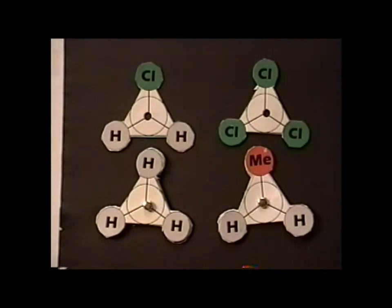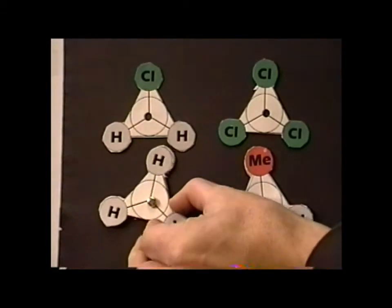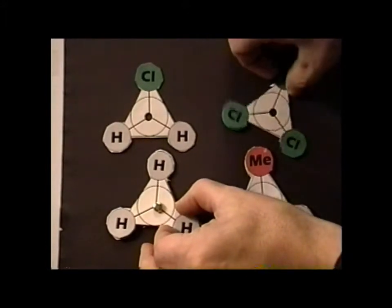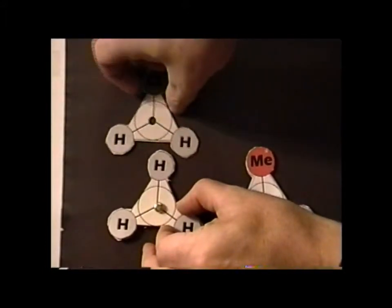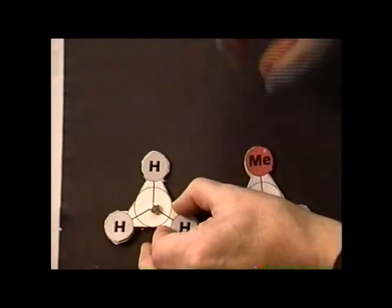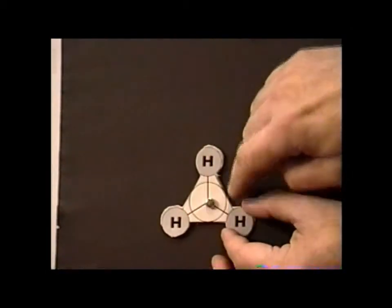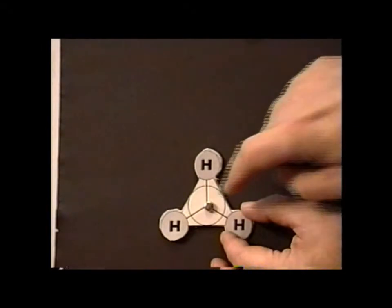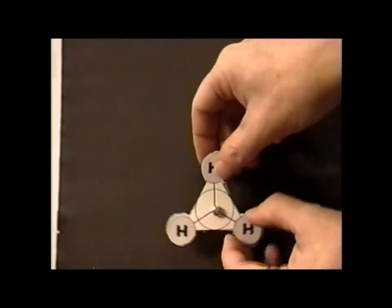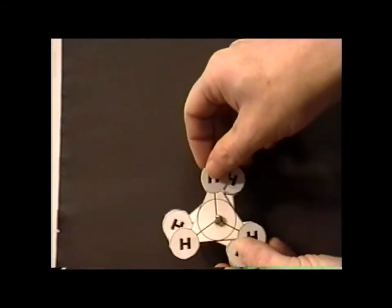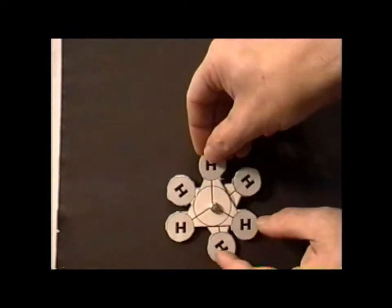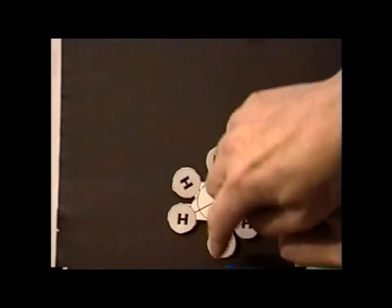But the Newman projection is much more useful than we often imagine. Let me show the simplest Newman projection here. We have a model of ethane, C2H6. And in the Newman projection, the substituents that are attached to the front carbon are shown in front, and then the substituents that are attached to the second carbon are shown behind.